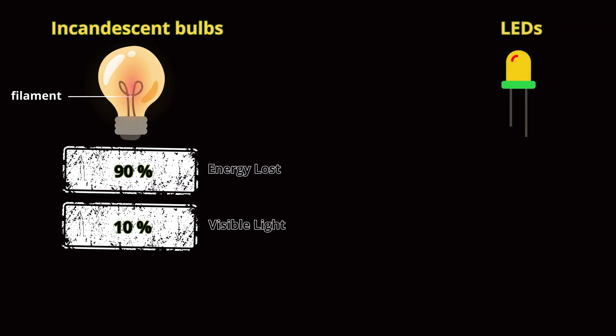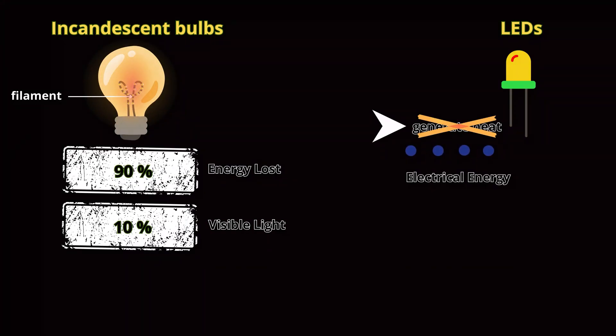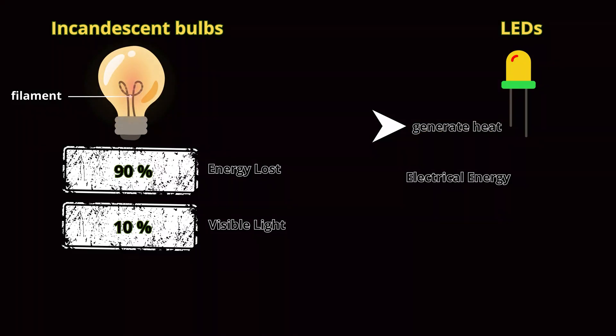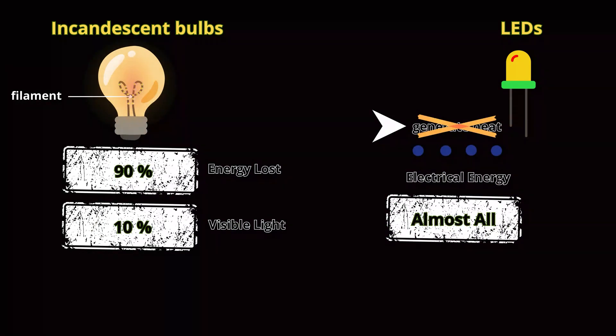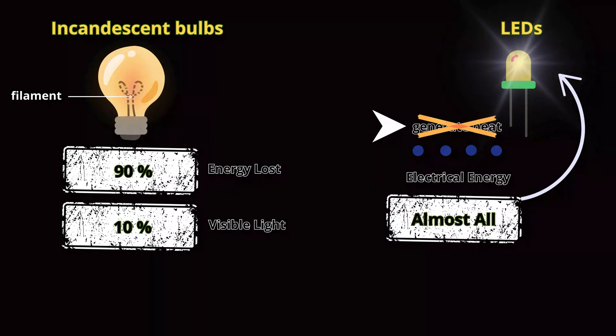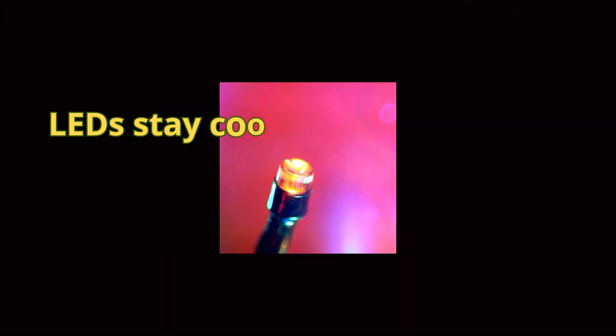LEDs are completely different. They don't need to generate heat to produce light. Instead, the electrical energy directly drives the movement of electrons, and almost all of that energy is converted into light. This is why LEDs stay cool to the touch and are far more energy efficient.